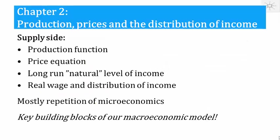This chapter is about the supply side, and there are four main themes: the production function, the price equation, the long run or natural level of income, and what determines the real wage and the distribution of income in the economy. Much of this chapter is going to be repetition of microeconomics.